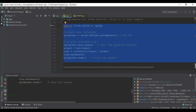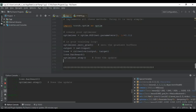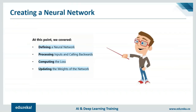To recap: we've defined the neural network, processed the input, called backward to check how the graph is calculated, computed the loss, learned how to reduce the loss, and updated the weights of the network.